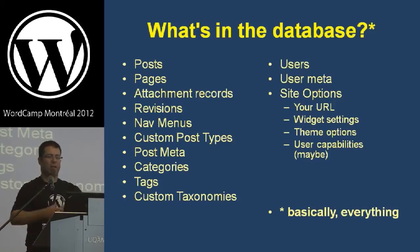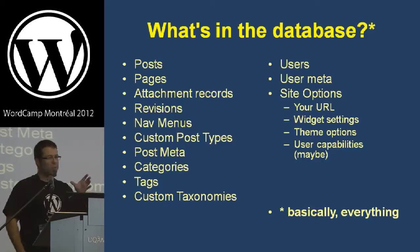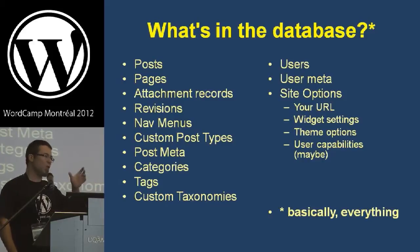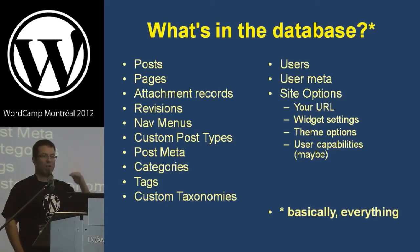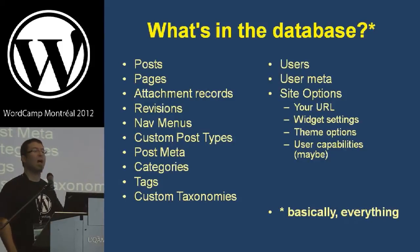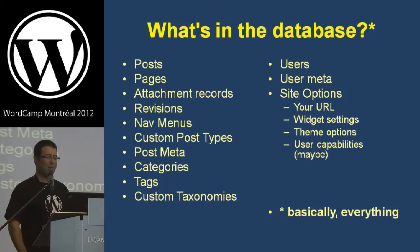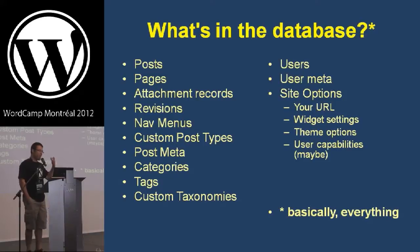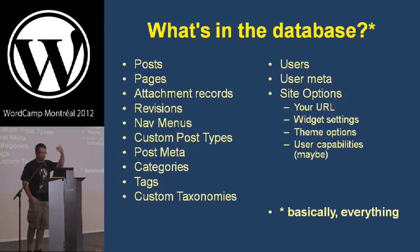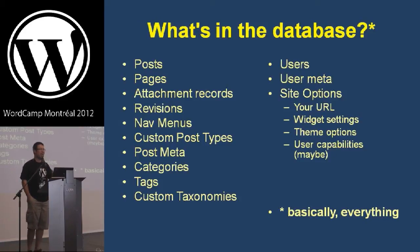I really want to talk to you and get you understanding the whole realm of the database, but we're going to specifically focus on posts. There's all kinds of content that falls under the category of posts. Just to talk about what's in the database — basically almost everything in WordPress is in the database: your posts, pages, attachments, revisions, nav menus, users, site options, roles — everything is in the database.